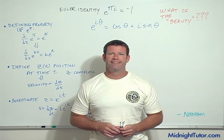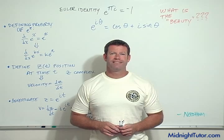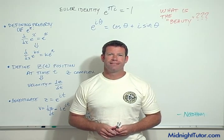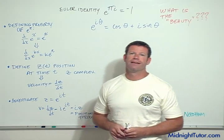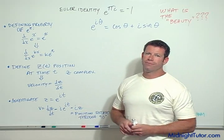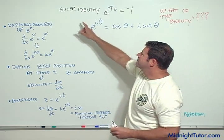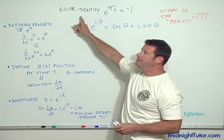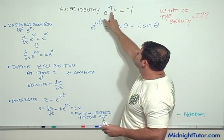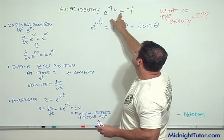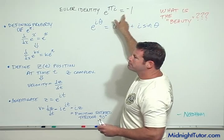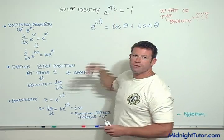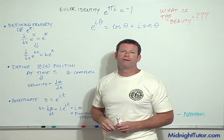Okay, well, somebody sent in a question and I wanted to make a little video about this interesting question. The question was the famous Euler identity: e to the pi i equals minus one, or you also see it written e to the pi i plus one equals zero.